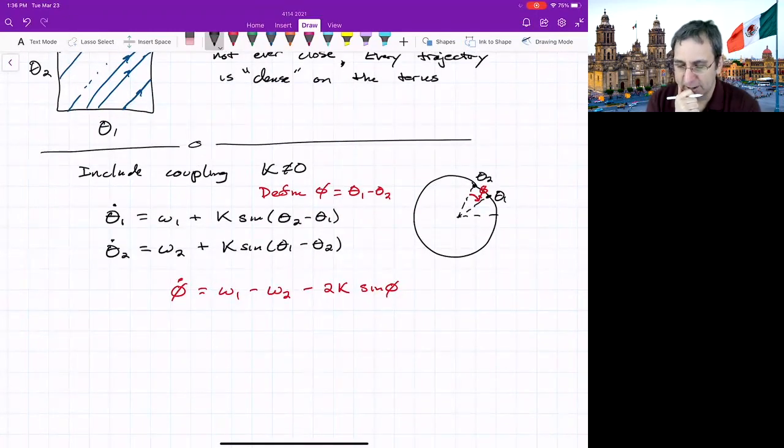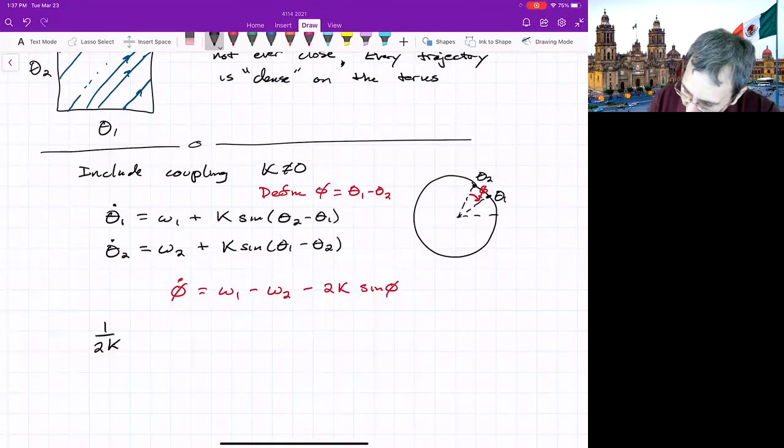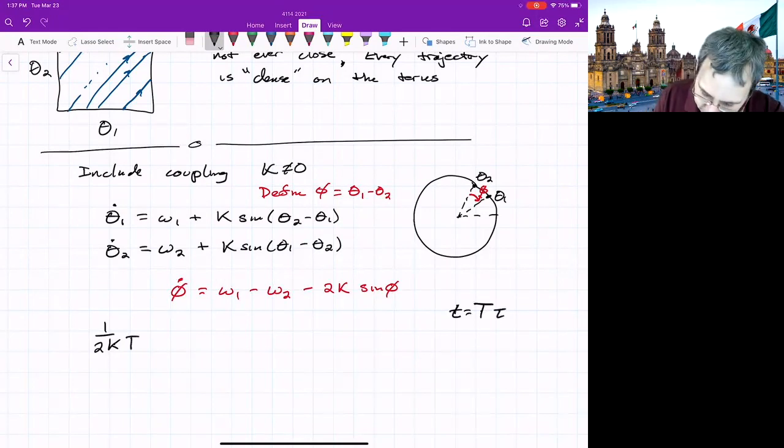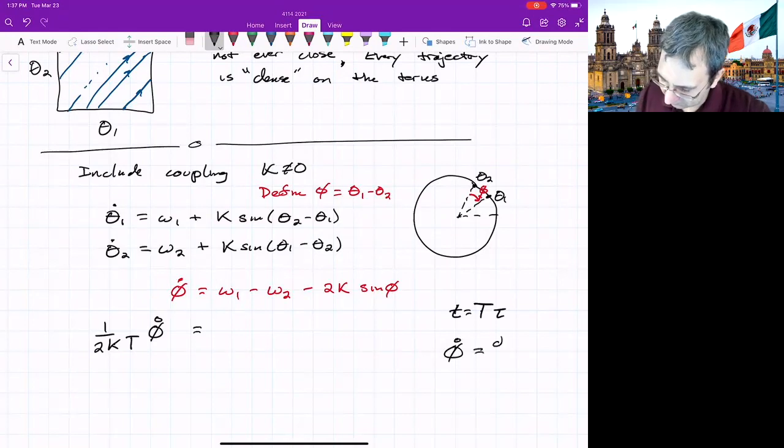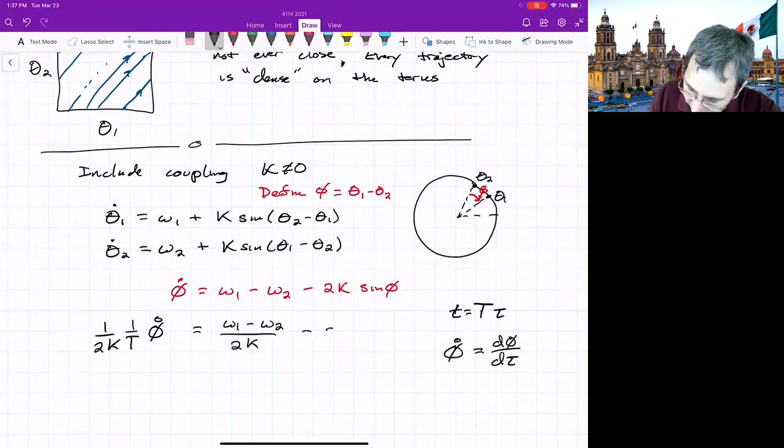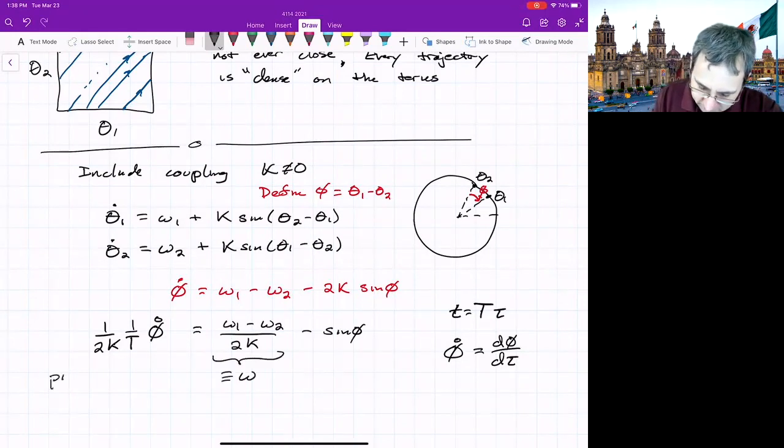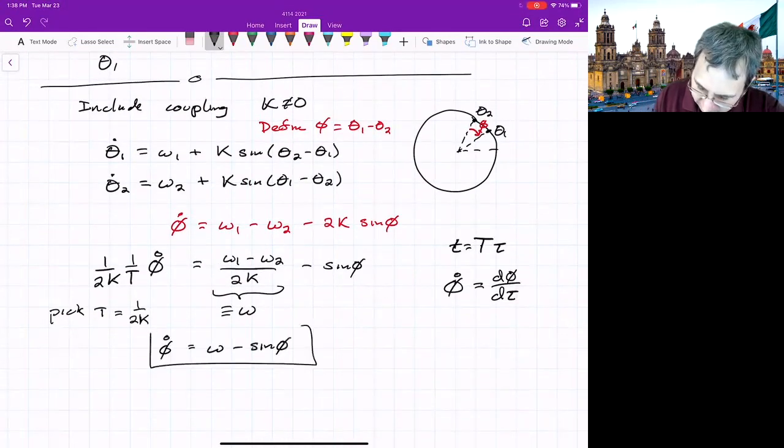And if you look at this, you might notice, hey, this looks a lot like what we did before for that, for Sniper. Or when we look before at the bottleneck, the ghost flows on the circle. So we can non-dimensionalize this and put it exactly in that form. Let's divide by two K, and then we'll introduce a non-dimensional time with some unknown timescale T. So the T, and I'll call this phi open over dot. So this is D phi D tau. We get omega one minus omega two over two K minus sine phi. We could just define this to be omega, and then pick T equals one over two K. And then it looks exactly like what we had before.